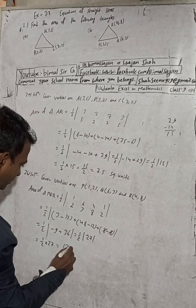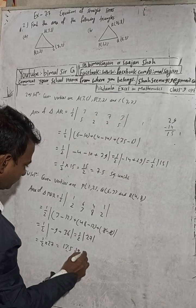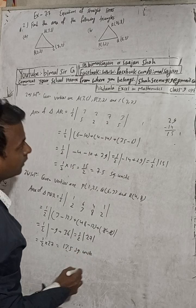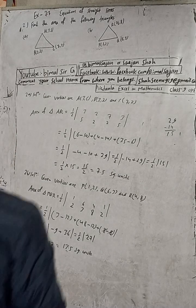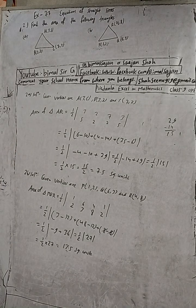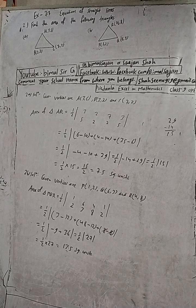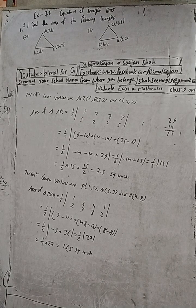So dear subscribers, this is 1/2 into 27, which means 13.5 square units. This is the solution. Share with friends, like the videos, and give us a comment. See you in the next video. Radhe Radhe, Jai Shri Krishna.